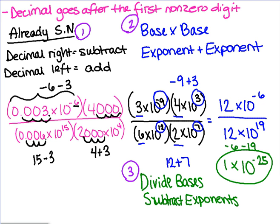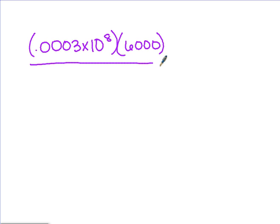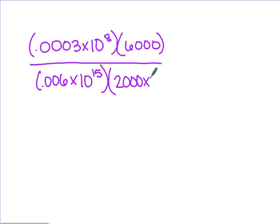I'm going to have you try one example on your own. This will take some getting used to, but you just need to follow those steps. The problem is: 0.0003 times 10 to the 8th, times 6,000, over 0.006 times 10 to the 15th, times 2,000, times 10 to the 5th. Go ahead and try that one on your own. If you need to, pause the video; when you're ready to move on, hit play.